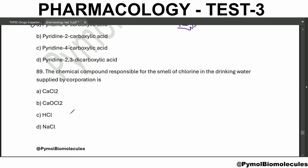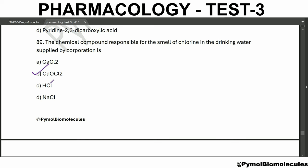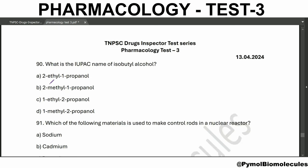The chemical compound responsible for the smell of chlorine in drinking water is calcium hypochlorite (CaOCl2). What is the IUPAC name of isobutyl alcohol? 2-methyl-1-propanol. In the second position there is a methyl group, so that is 2-methyl-1-propanol.